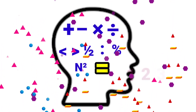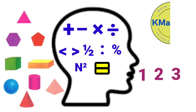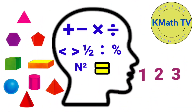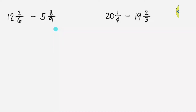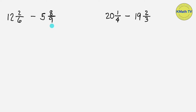Hi! Welcome to KMathTV. In this video, I'll show you how to subtract mixed numbers with different denominators with regrouping. Let's solve the first example: 12 and 2 sixths minus 5 and 8 ninths.